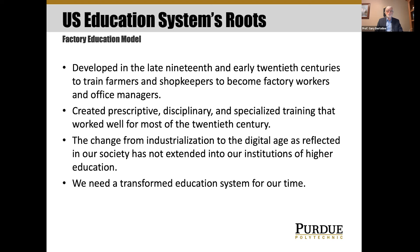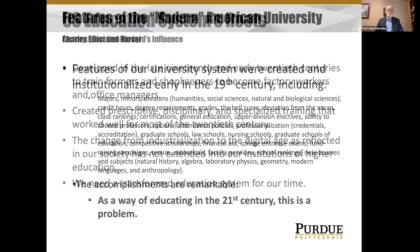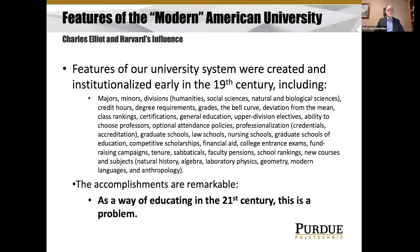We really need to transform our entire education system for this digital age. If you look at the features of the modern American university, it's really developed through Harvard's influence and Charles Elliott, the president of the time, and about ten different universities in the United States. If you look at this list of features, you're going to see that most of those features are still ongoing. That doesn't mean they're all bad, but it might raise questions about whether we should be talking about what the next phase of higher education might be.